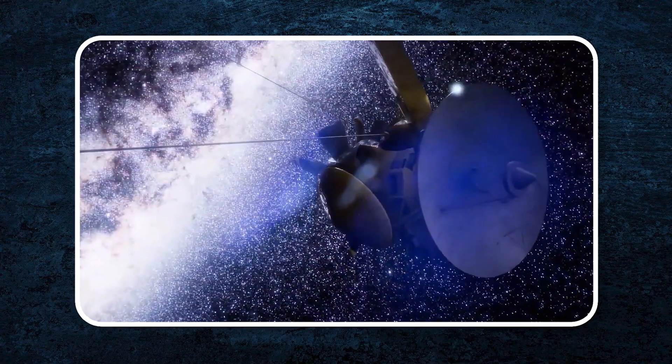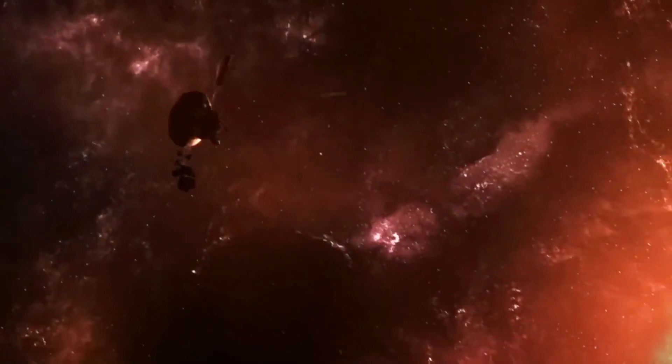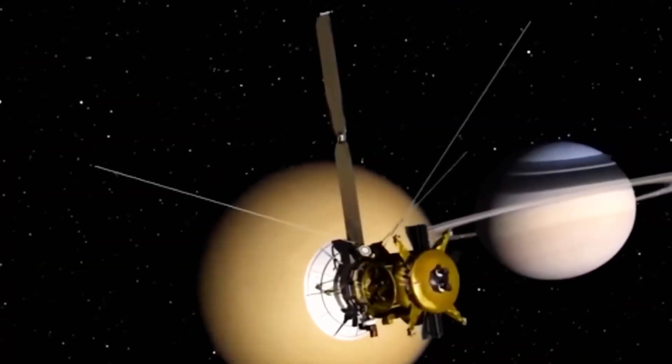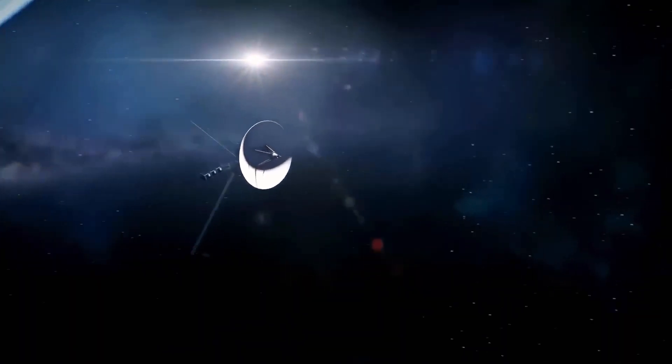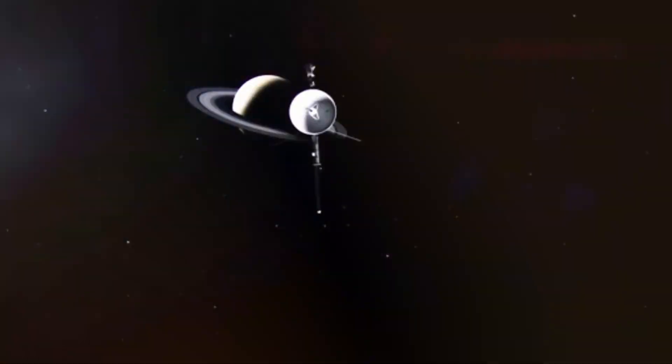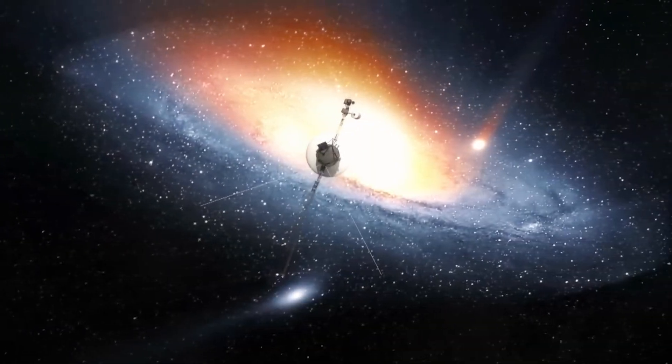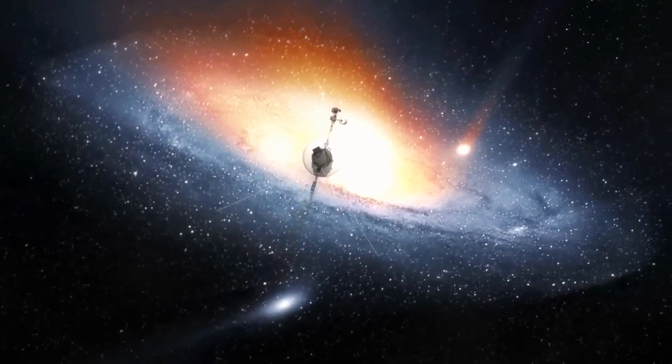So NASA had to move fast. That's how Voyager 1 and its twin, Voyager 2, were launched just 15 days apart in 1977. These probes were only supposed to last four years, but here we are, four and a half decades later, and they're still going. They've flown past planets, dodged asteroid belts, and kept sending back mind-blowing discoveries.